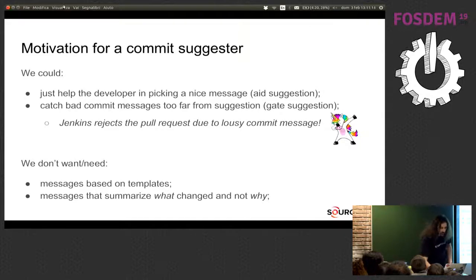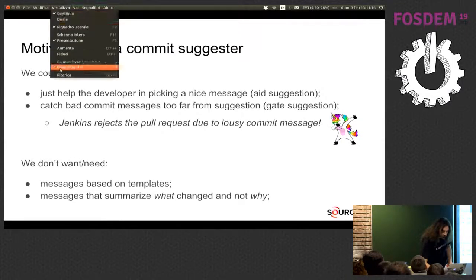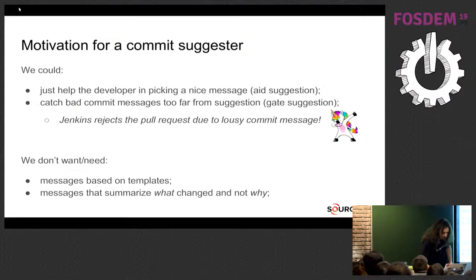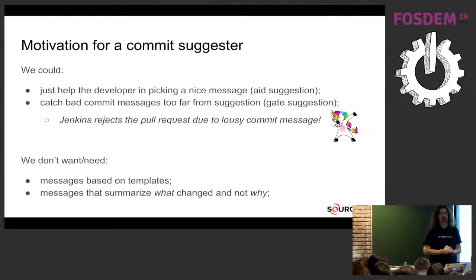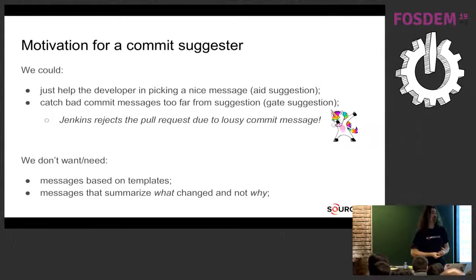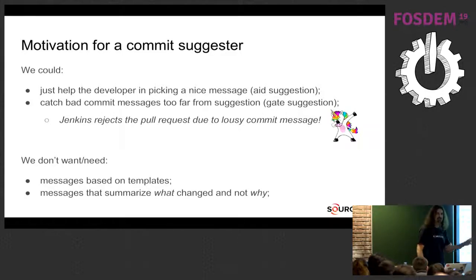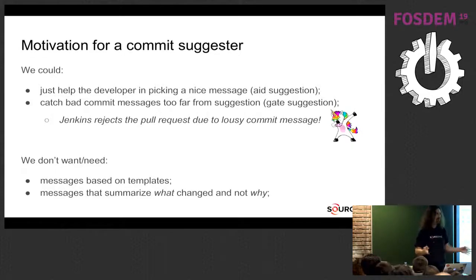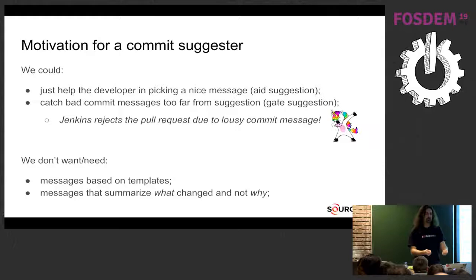Why would we want a commit message suggestion? For example, because we want to just help the developer — give an aid to the developer — or we want to catch bad commit messages. Just imagine if your Jenkins pipeline was able to reject pull requests based on a lousy commit message. I think we've all been there. So it would be nice if we had an automated way to generate stuff to use it as similarity metrics on how good a commit message is.